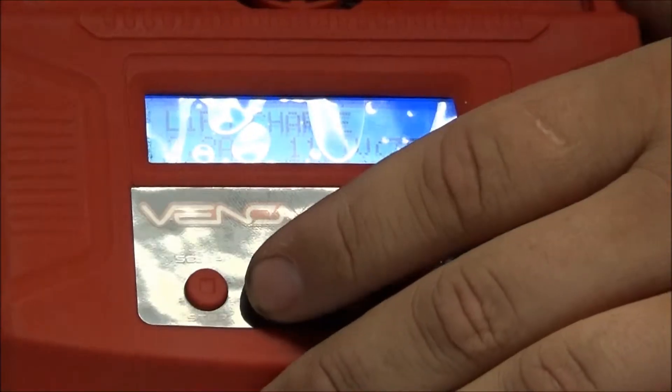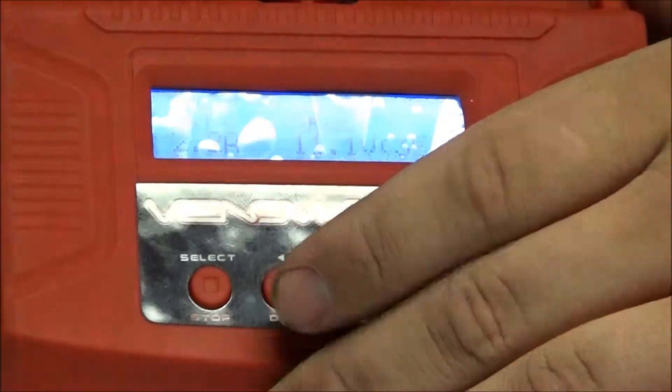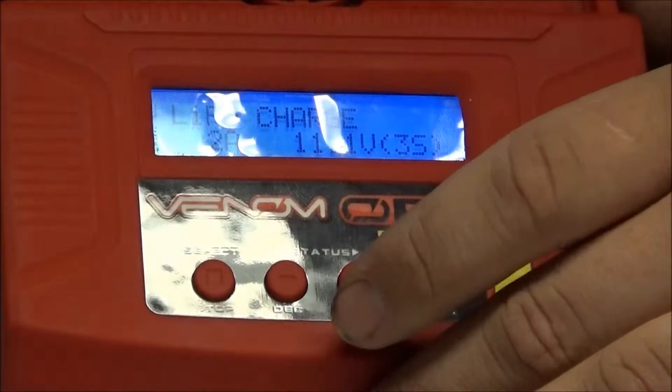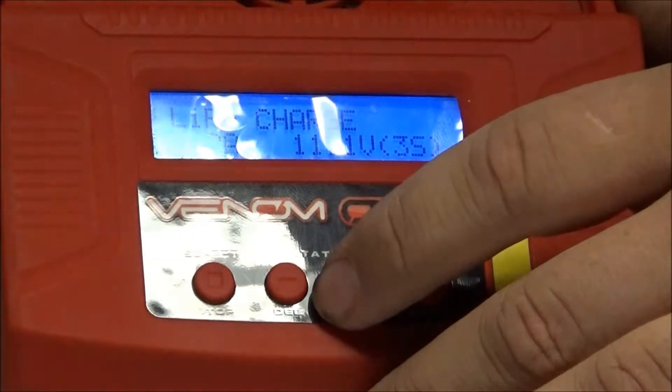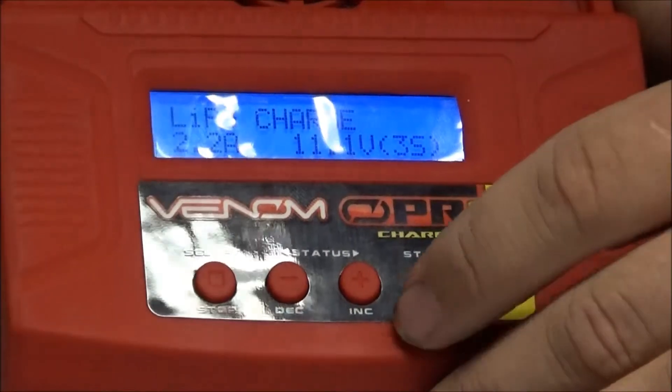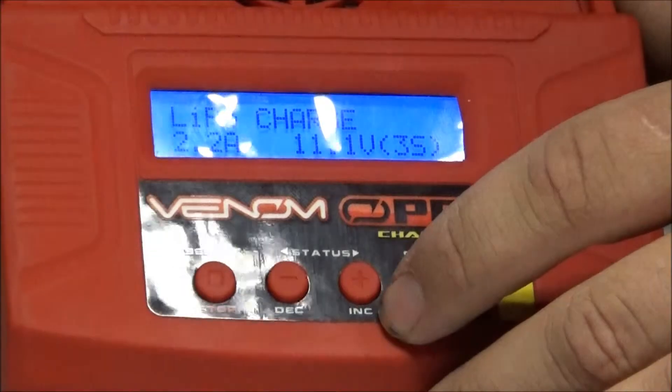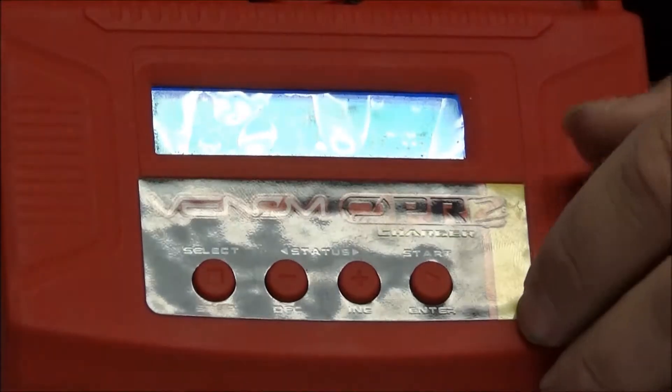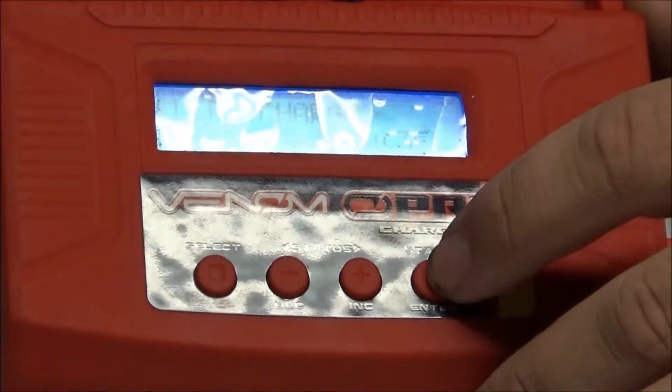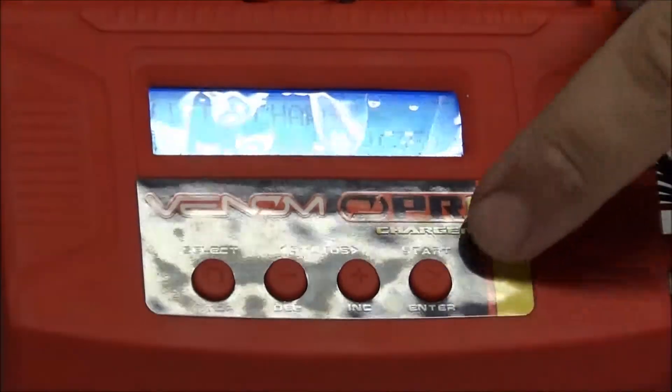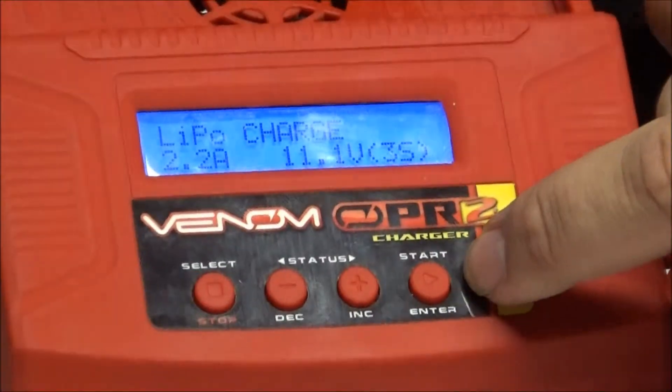So you've got your stop. First of all, let's go over the buttons. We have our stop. We have our select. We have our discharge button, our status. Then we have our charge button and status as well. Then we've got enter and then we've got enter and start.